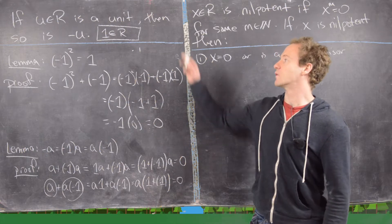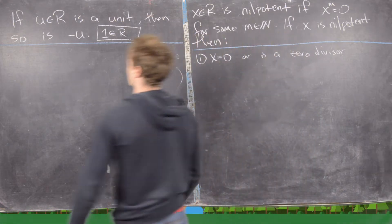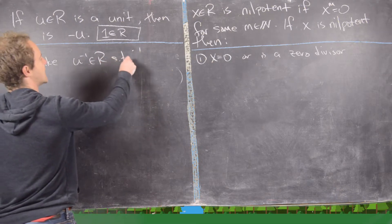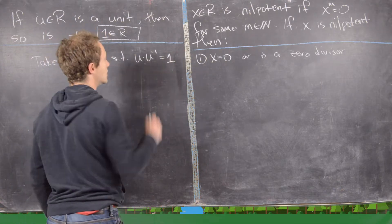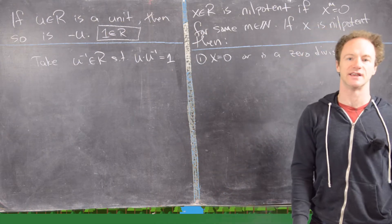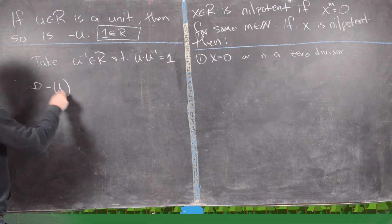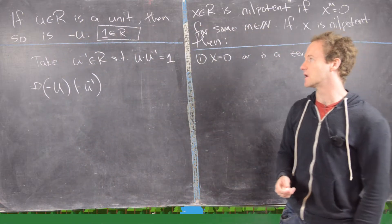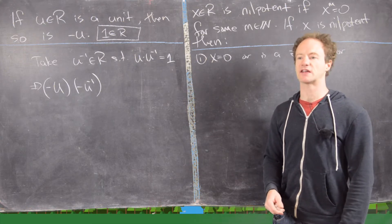Now that we have these lemmas, we're ready to prove the main result. Let u-inverse in R be such that u times u-inverse equals 1 — such an element exists because we're assuming u is a unit. We look at the product negative u times negative u-inverse, which is the natural candidate for an inverse of negative u. Think of the inverse of negative 2 in the rationals being negative one-half.